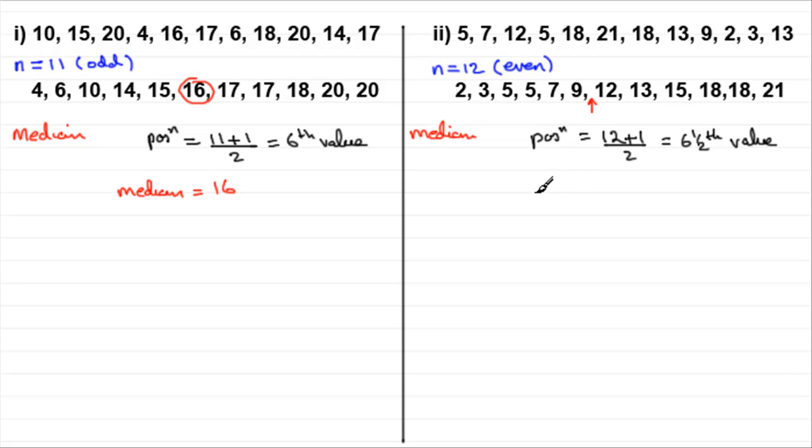So when this happens, what we've got to do is work out what the mean is of these two numbers either side. In other words, you take those two values and you divide them by 2. And if you do 9 plus 12 over 2, you're going to get 10.5. So that's our median in a case like that. And this will always happen when you've got an even number of values in a list.